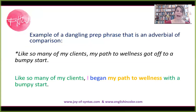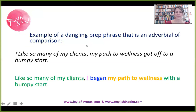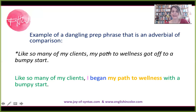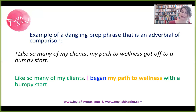Now, to wrap this up, I wanted to give you an example of a dangling prep phrase that is actually not a predicate appositive: 'Like so many of my clients, my path to wellness got off to a bumpy start.' There is a disconnect between the prep phrase of comparison and 'my path.' Let's fix this — it's easy. 'Like so many of my clients' sets up a comparison between somebody and his or her clients. The 'I' is implied but not stated in the main clause. Corrected: 'Like so many of my clients, I began my path to wellness with a bumpy start.'